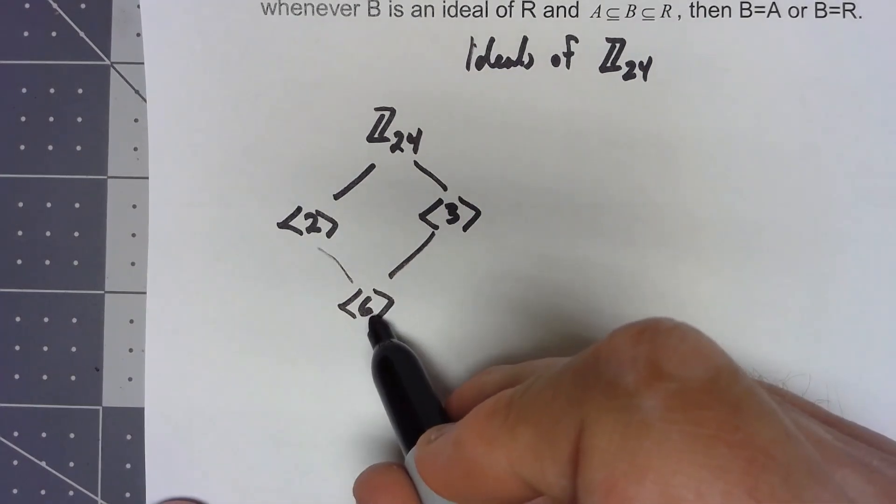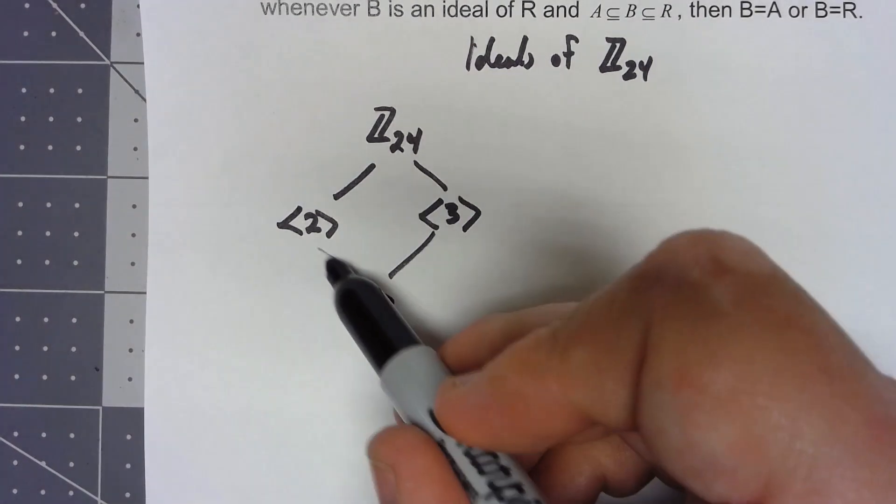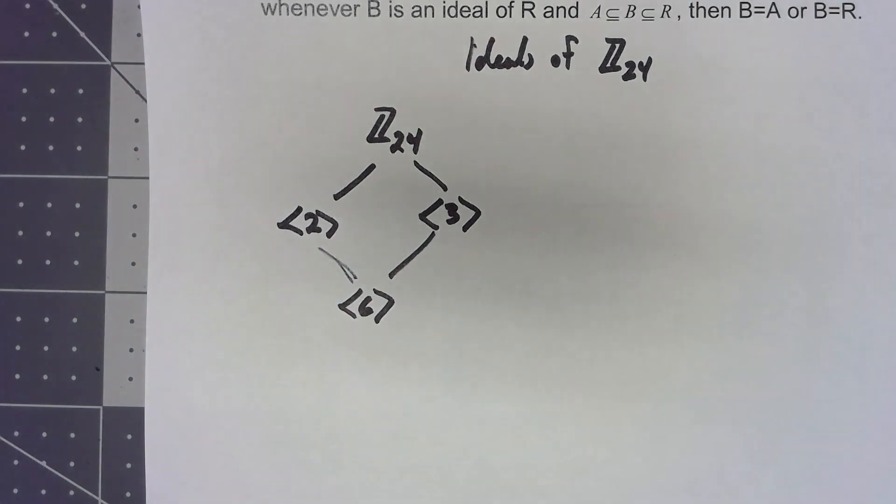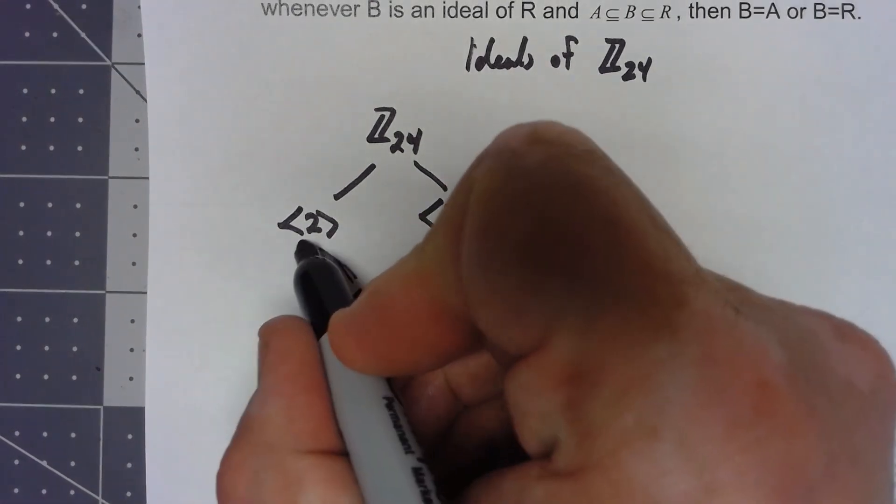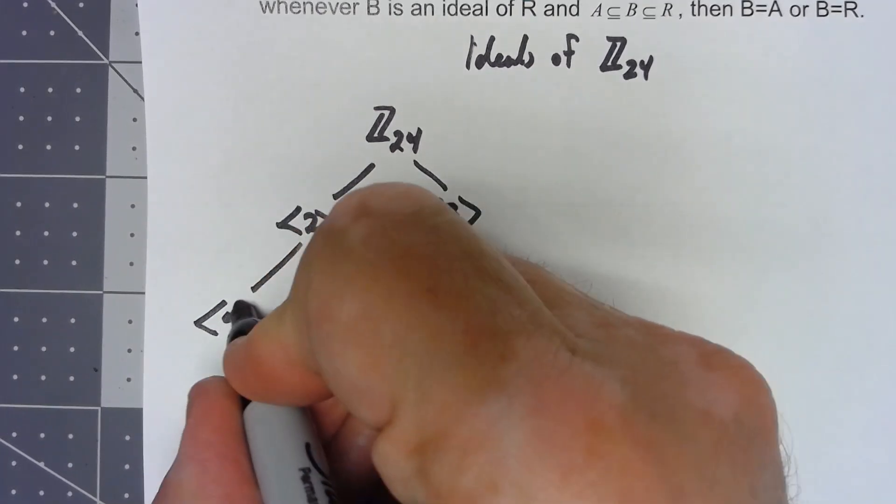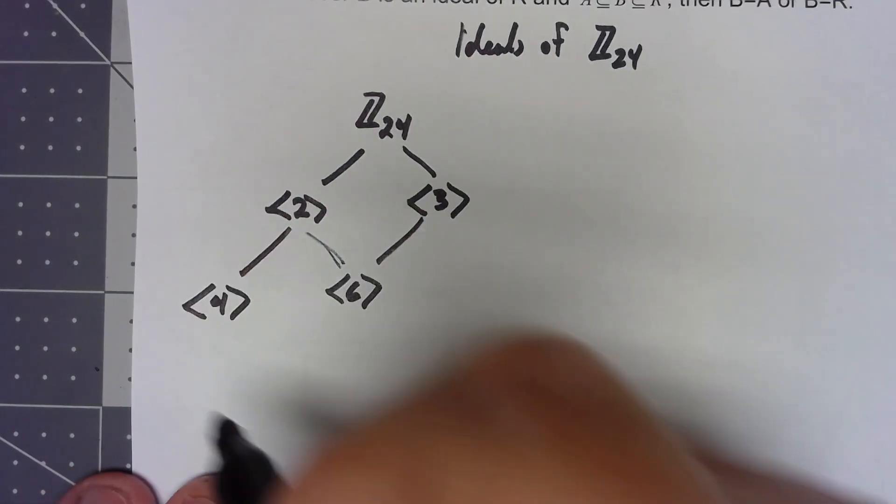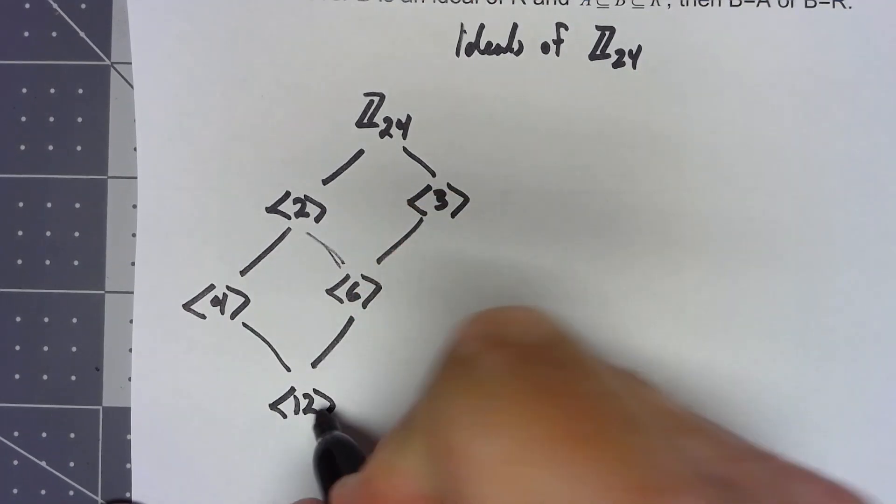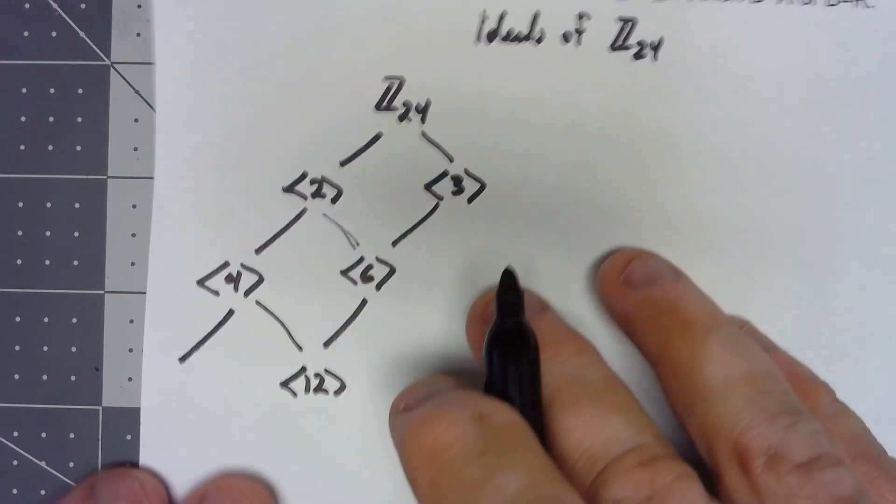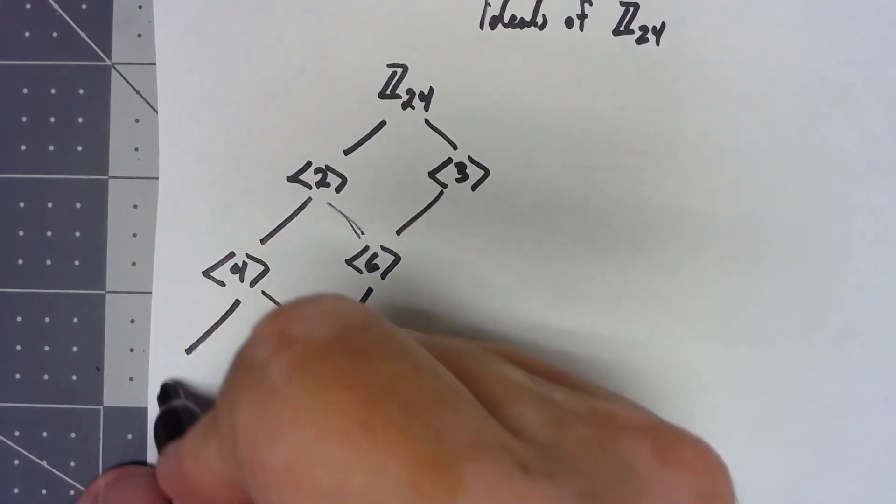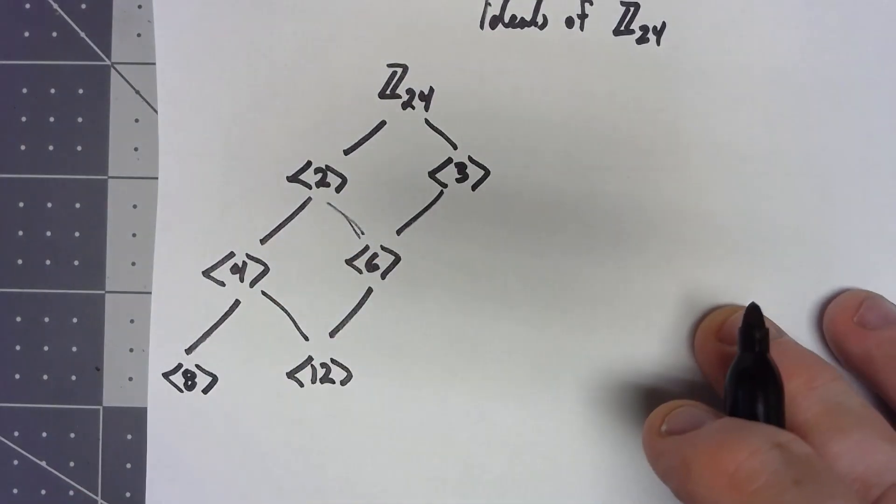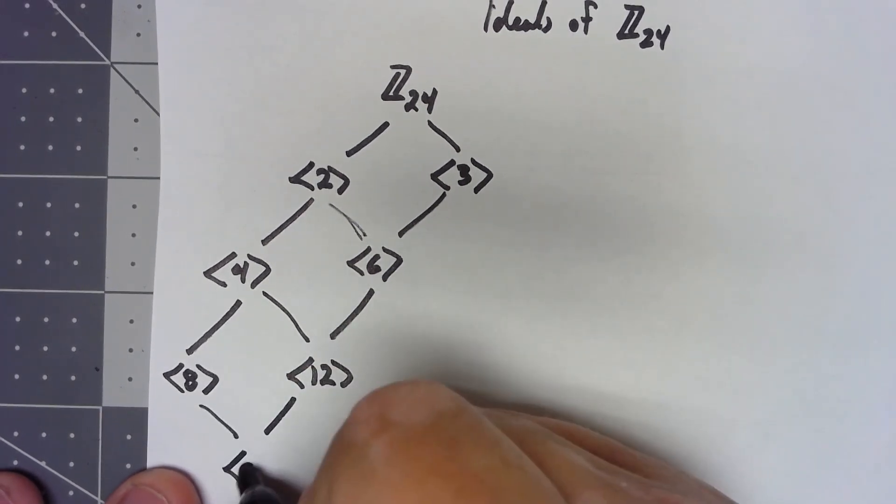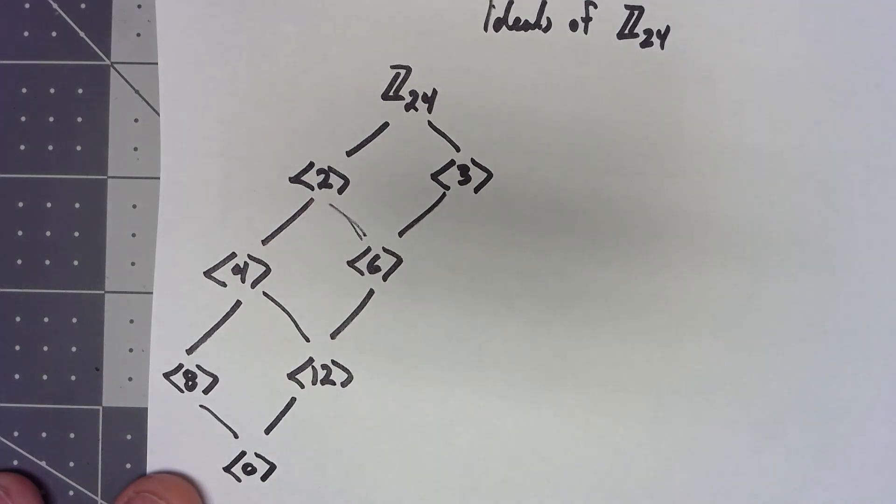The set of multiples of 6 is a subring of both the multiples of 2 and the multiples of 3. The set of multiples of 4 come off there but not off of the 6. Down below these, we've got the set of multiples of 12. Over here, we've got the set of multiples of 8. And then off of both of those, we have just the 0 ideal.